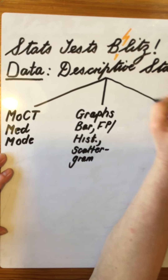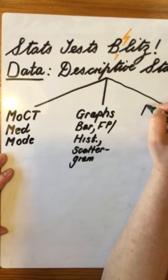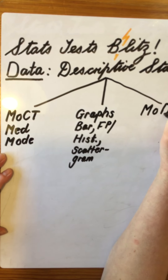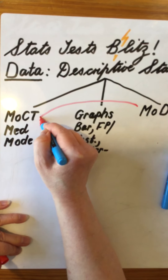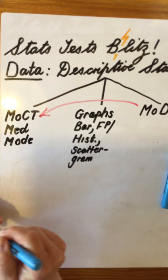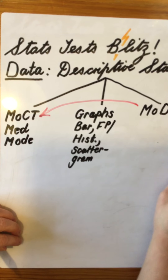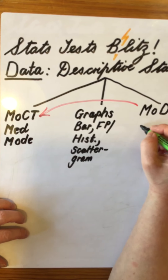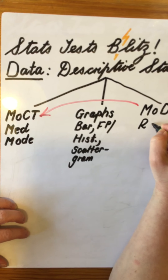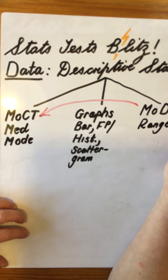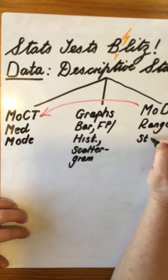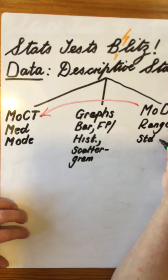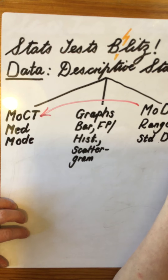Another way of describing our stats is to use measures of dispersion. It relates to the mean because we want to see how far away or how near our spread of data is to the mean. So we can use range there. Remember, the weakness of range is that it only takes into account two scores — the highest and the lowest. If we want a more powerful measure of dispersion, we'll use standard deviation.